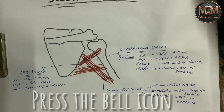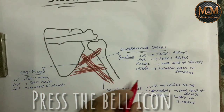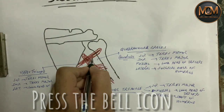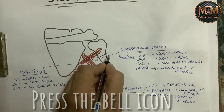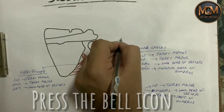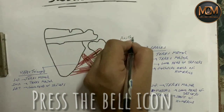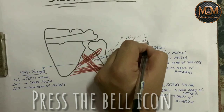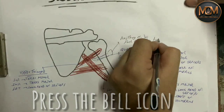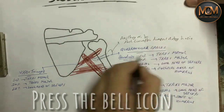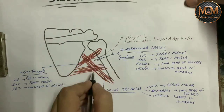Now let's understand the contents of these spaces. In the quadrangular space, two structures are present: the axillary nerve and the posterior circumflex humeral artery and vein.